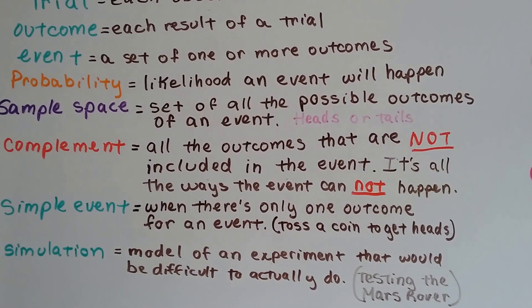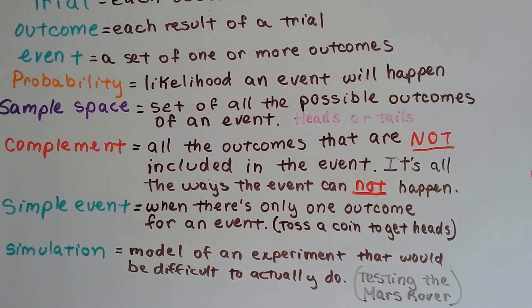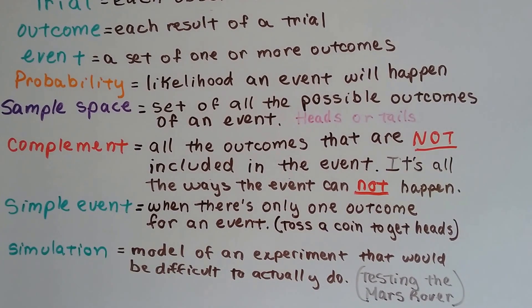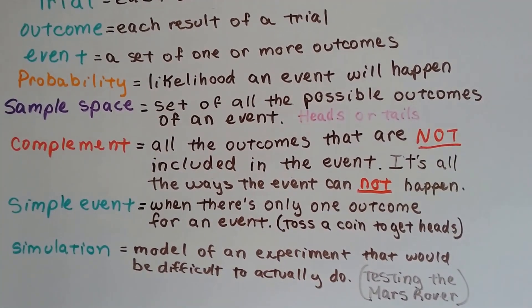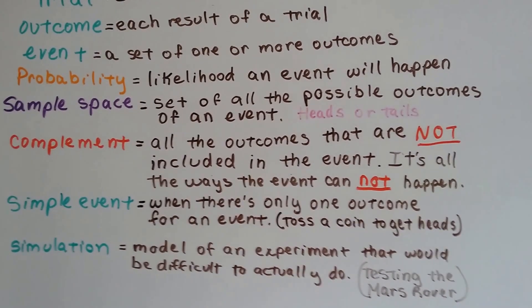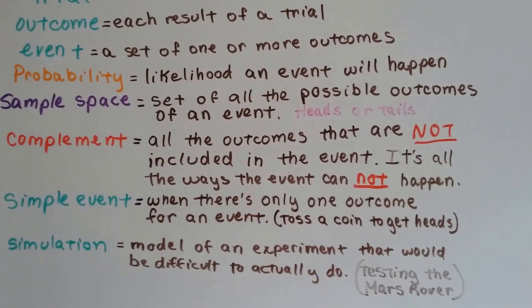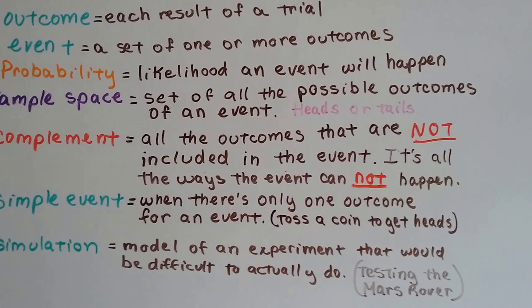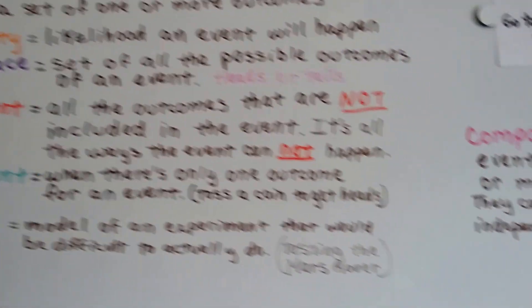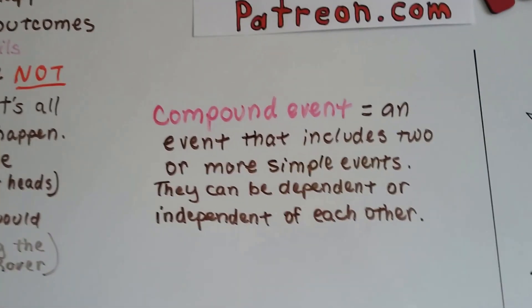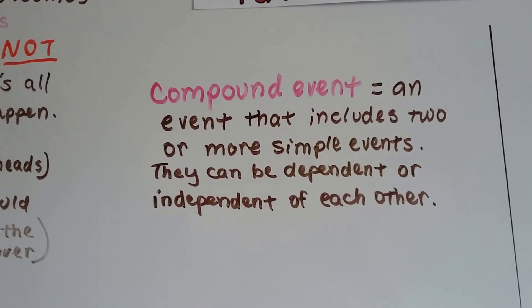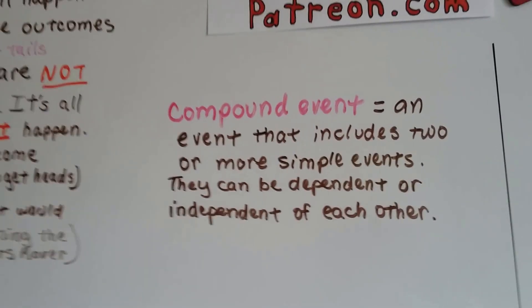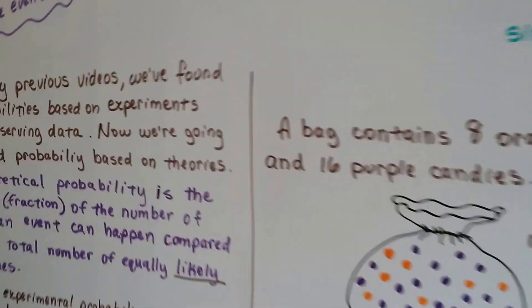A complement, that's all the outcomes that are not included in the event. It's all the ways the event cannot happen. A simple event, well that's when there's only one outcome for an event. Like if we're trying to get heads and we toss a coin to get heads. A simulation is a model of an experiment that would be difficult to actually do. And a compound event is an event that includes two or more simple events. They can be dependent or independent of each other. Like in our previous video when we did flavors of ice cream versus a cone or a cup.